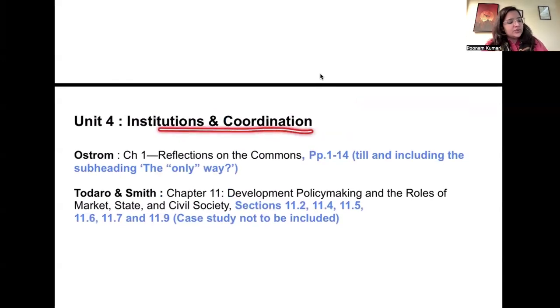Apart from that, the fourth topic will be based on institutions and coordination. How people can coordinate and get better outcome in an efficient manner. So for that, we will be referring to the book that we said, Governing the Commons by Eleanor Ostrom. Chapter number one, Reflections on the Commons. So page number one to 14 we have to cover. And then from Todaro and Smith, we have another chapter which is based on development policy making. And what is the role of market, state and civil society in the same? Which sections you have to cover? They have been specifically mentioned here. So all these sections we will do. We will not be doing any case study from here. So that concludes your syllabus discussion regarding the units.